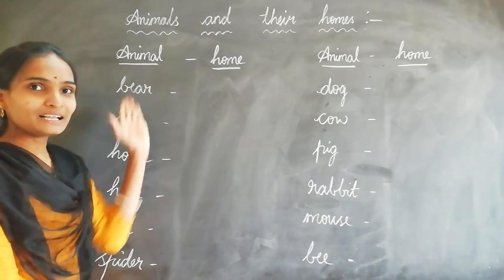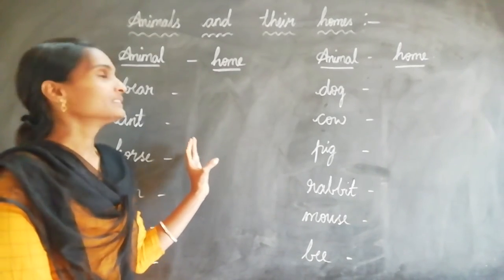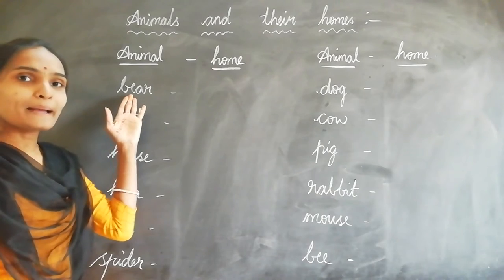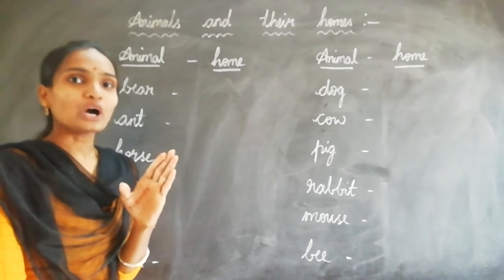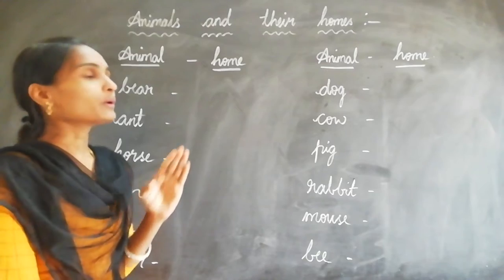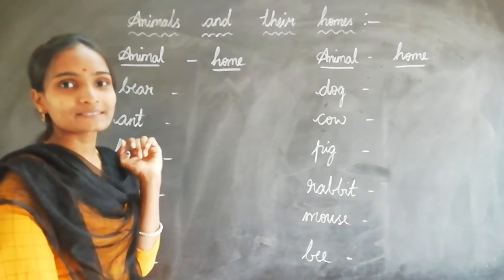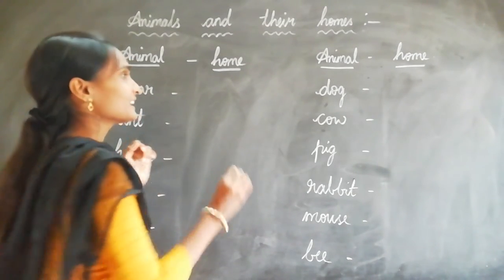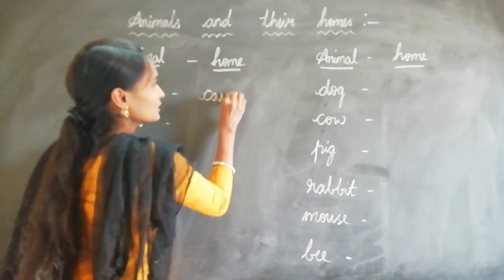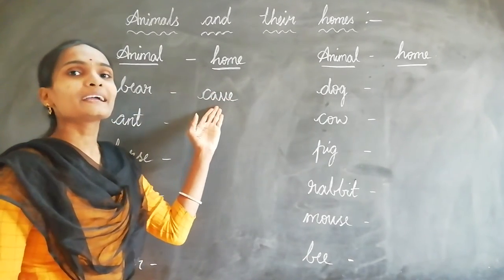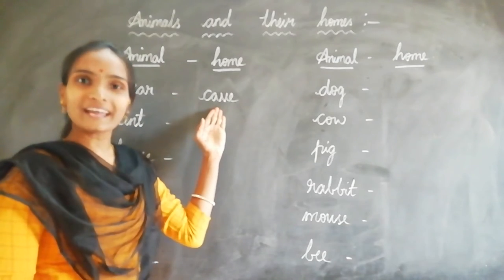Animal and home. The first word: bear. You all know bear, children. The home of the bear is called a cave. Bear lives in a cave.